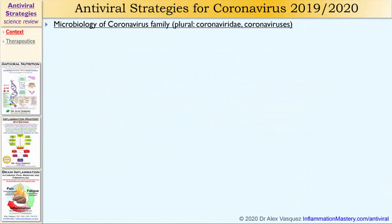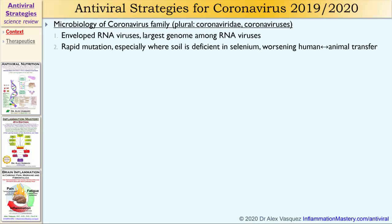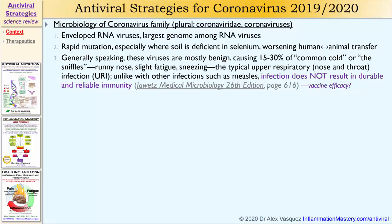Here I'll discuss very briefly some of the microbiology of the coronavirus family. These are enveloped RNA viruses and they contain the largest genome among RNA viruses. They undergo rapid mutation, especially where the soil, and therefore the food, and therefore the people and animals, are deficient in selenium — which worsens the human-animal intertransfer and mutations. Generally speaking, these viruses are mostly benign, causing 15 to 30% of the common cold. This is the typical upper respiratory nose and throat infection. Unlike with other infections such as measles, infection with coronavirus does not result in durable and reliable immunity. So what does that tell you about the anticipated efficacy of vaccines against coronavirus? If the full infection with a living virus does not result in durable immunity, I'd be surprised if vaccines are able to surpass the effectiveness of a natural infection.